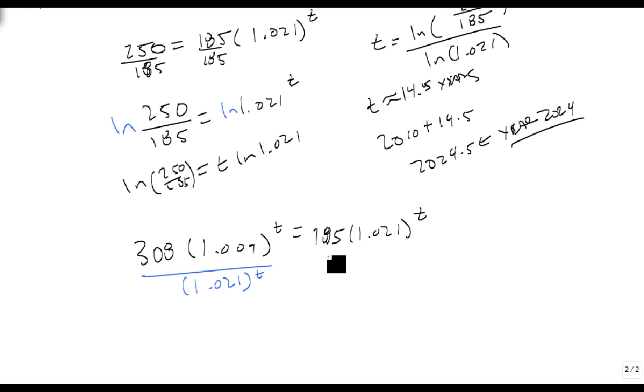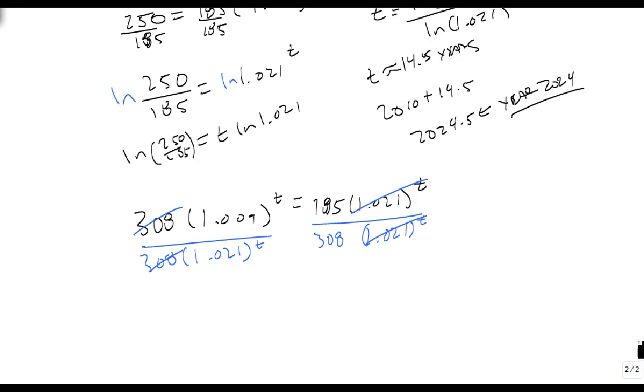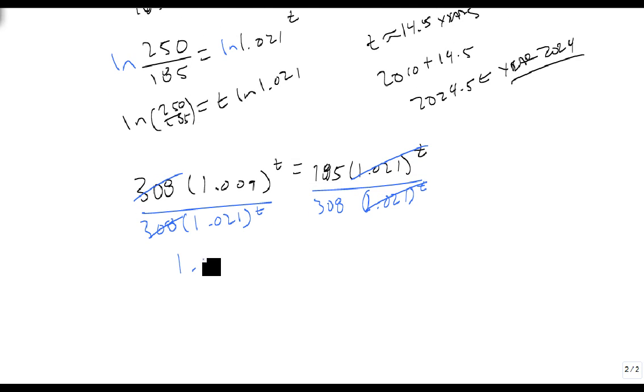So I'm going to separate my numbers, and I'm going to get 1.009 raised to the t divided by 1.021 raised to the t equals 185 over 308. Well, at this point, I'm going to turn this into a single logarithm: (1.009 divided by 1.021) to the t, and that's going to be equal to 185 over 308.